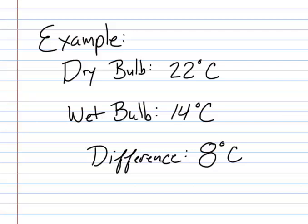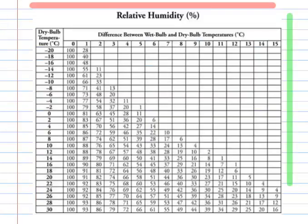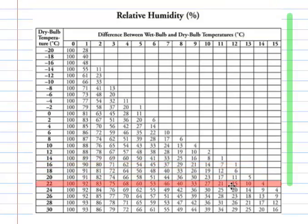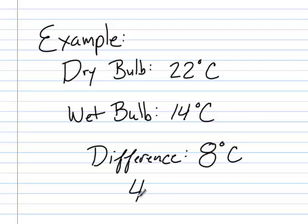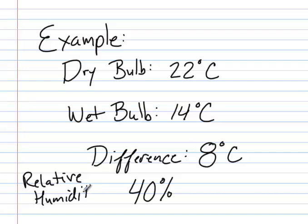Now it's time to flip over our lab and look at the chart on the back. We start by looking at our dry bulb temperature, which was 22 degrees, and then the difference in temperature between our dry bulb and wet bulb, which was 8 degrees. Looking on our graph, at 22 degrees and a difference of 8 degrees, the relative humidity would be calculated at 40%.